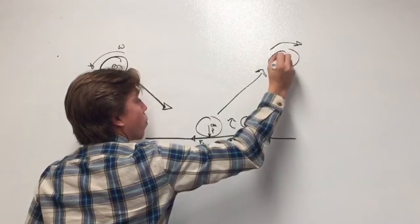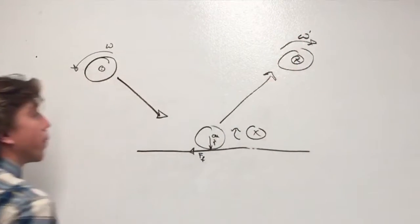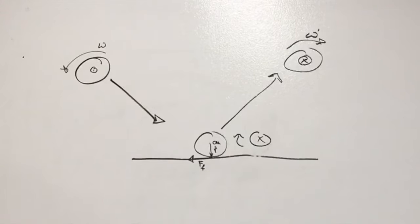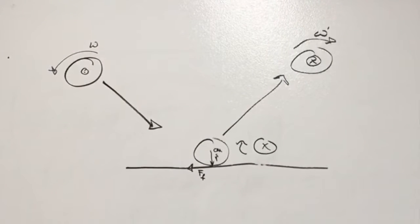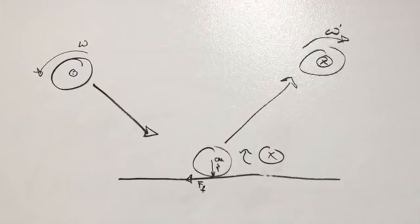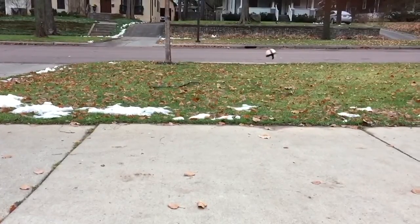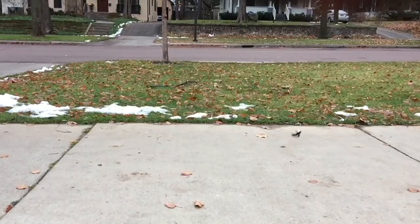Then, when it bounces again, the angular momentum is pointing into the page, while the torque on the ball is pointing out of the page, because the force is pointing in the opposite direction. In this case, the torque is not great enough to change the direction of the angular velocity, but it does slow the spin rate down.